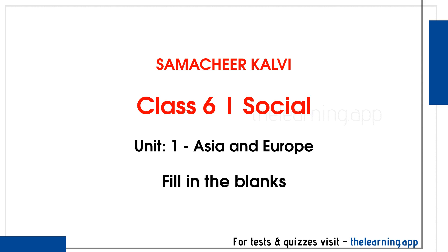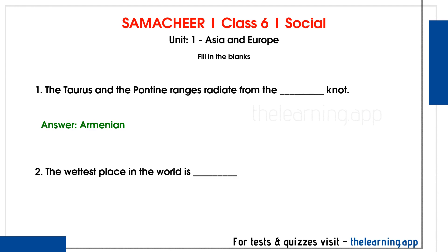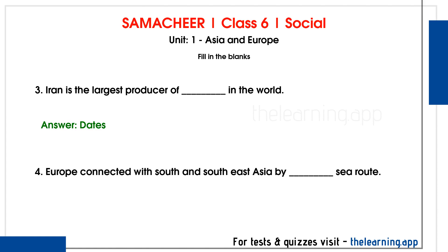Fill in the blanks. Question 1: The Taurus and the Pontine ranges radiate from the dash knot. Correct answer is: Armenian. Question 2: The wettest place in the world is dash. Correct answer is: Mawsynram. Question 3: Iran is the largest producer of dash in the world. Correct answer is: Dates. Question 4: Europe is connected with South and Southeast Asia by dash sea route. Correct answer is: Suez.